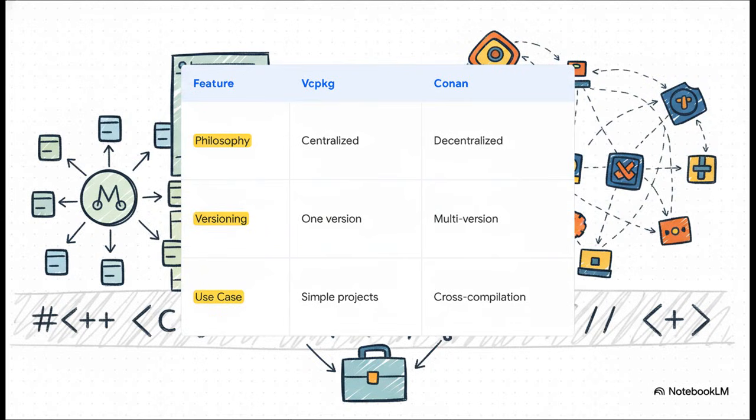So to try and manage all this, package managers started to pop up. The two biggest players today are VCPKG and Conan, and they have completely different philosophies. You've got VCPKG, which comes from Microsoft, and it's kind of like a centralized app store. It's curated, it's pretty simple, and it works great for most standard projects. On the other hand, you have Conan, which is totally decentralized and incredibly flexible. It's built for the really tough stuff, like complex versioning and cross-compiling for weird systems.